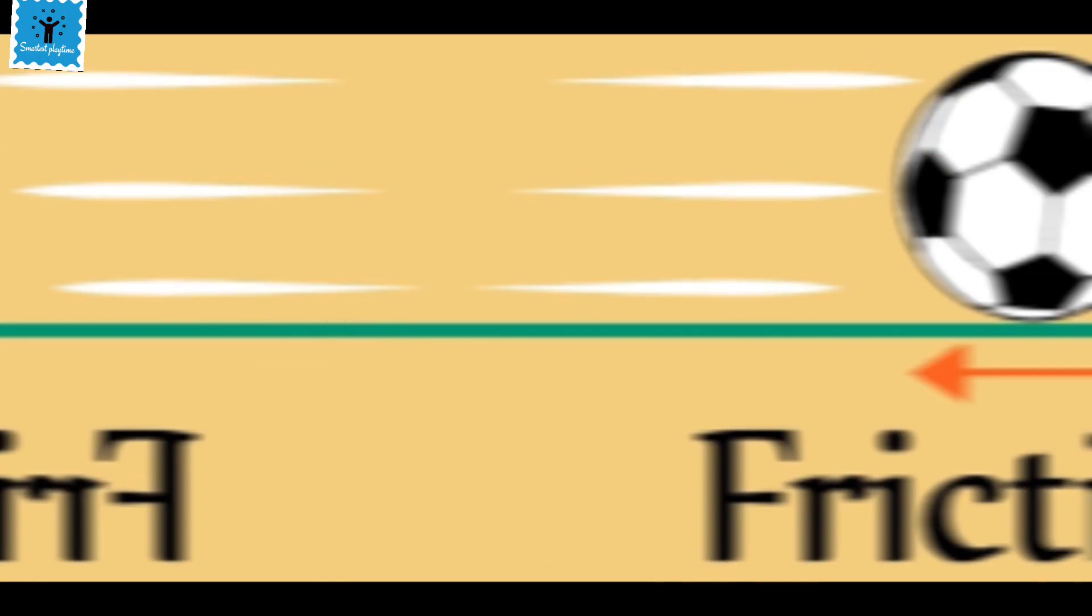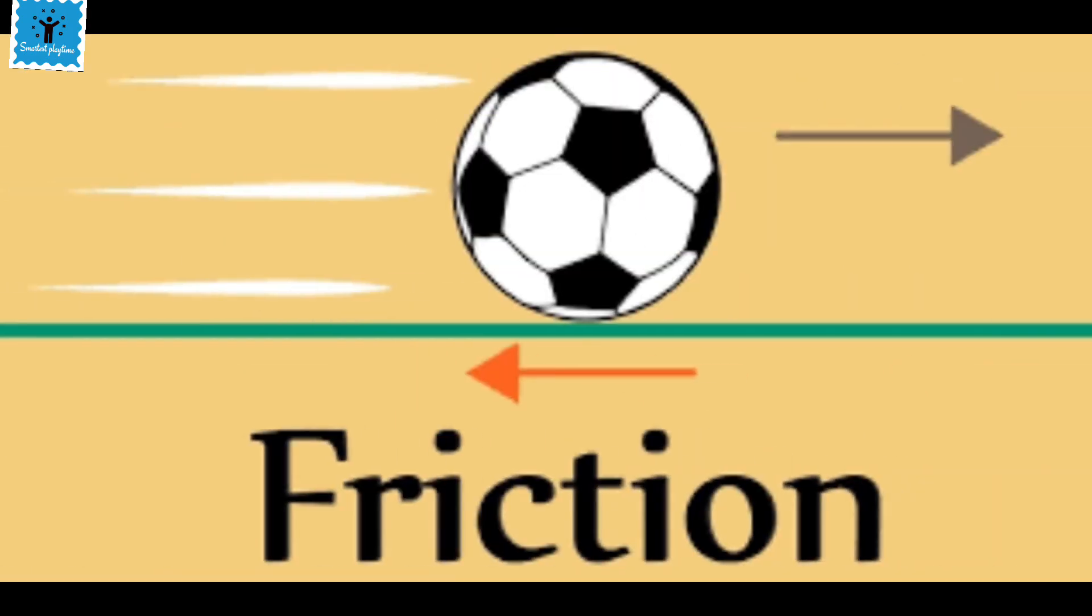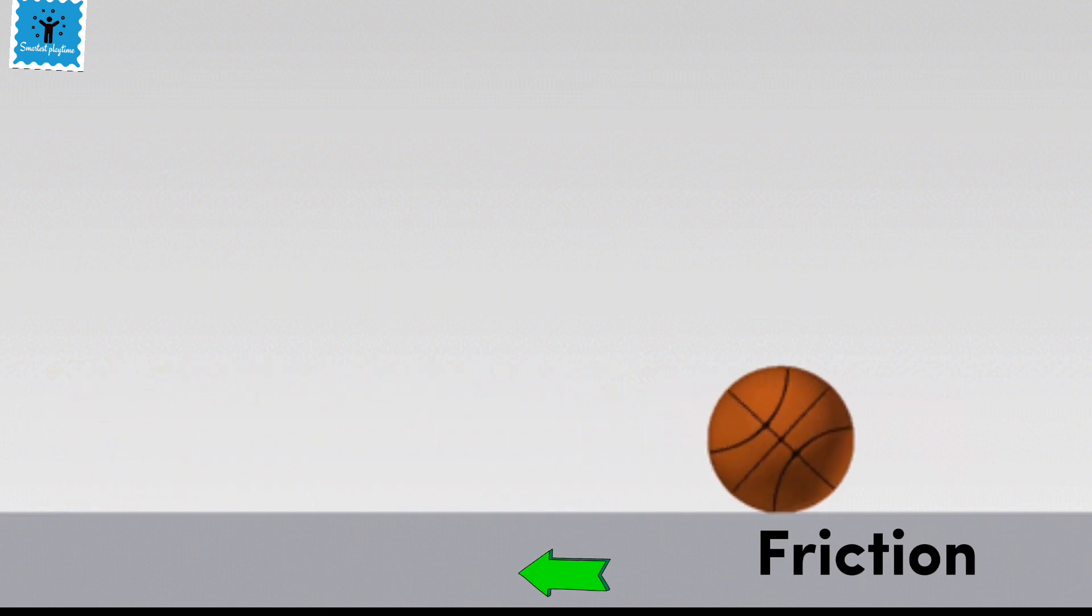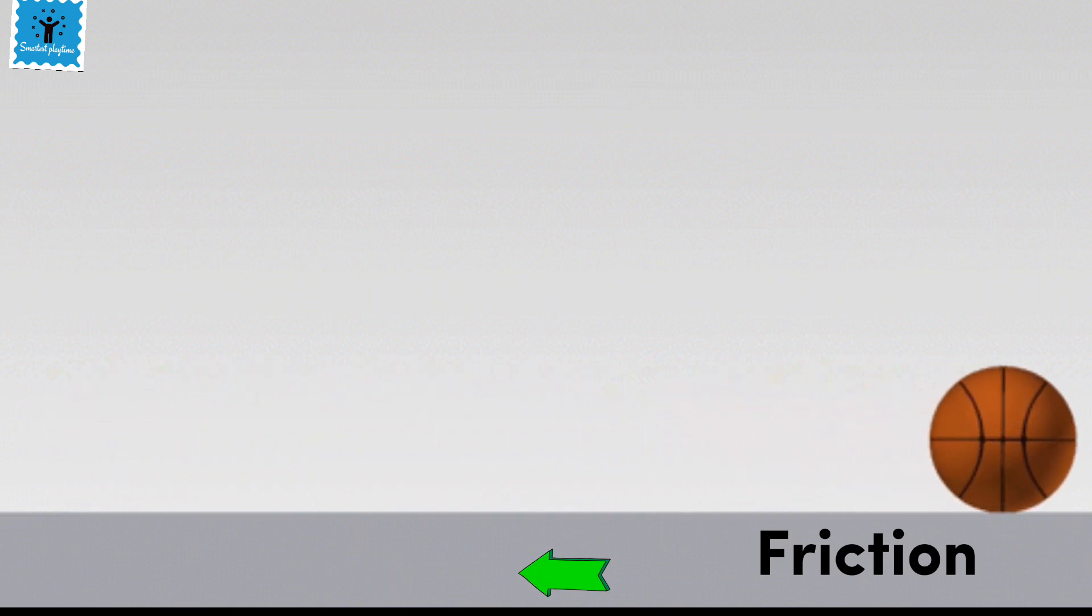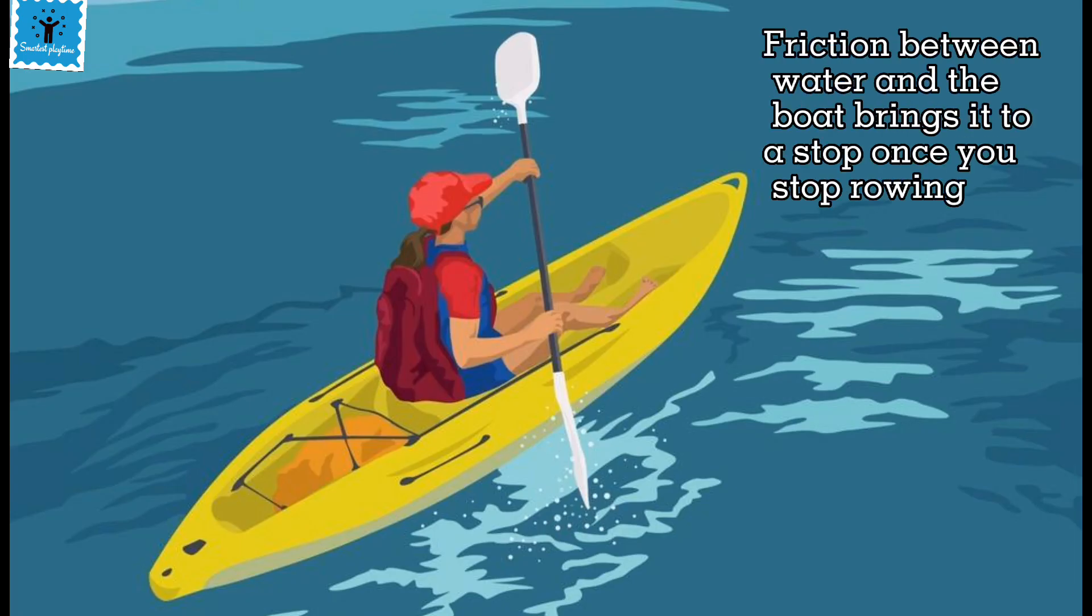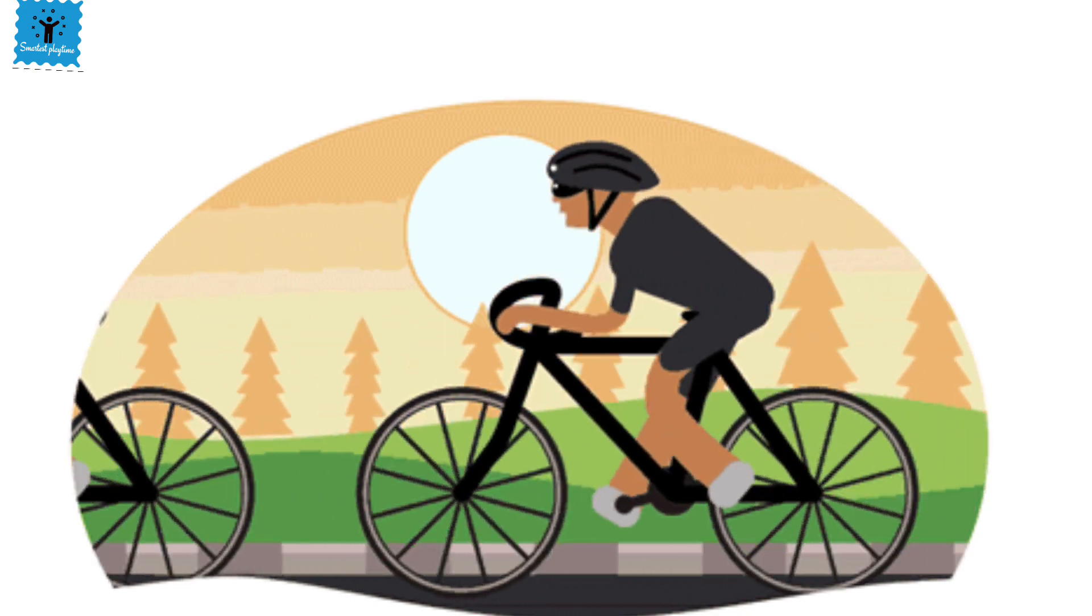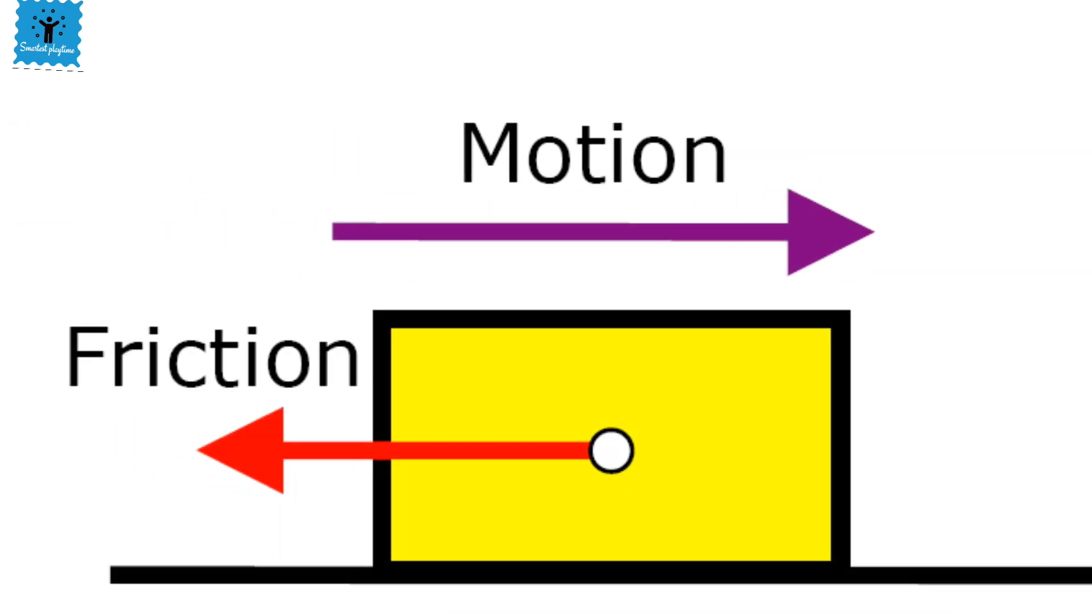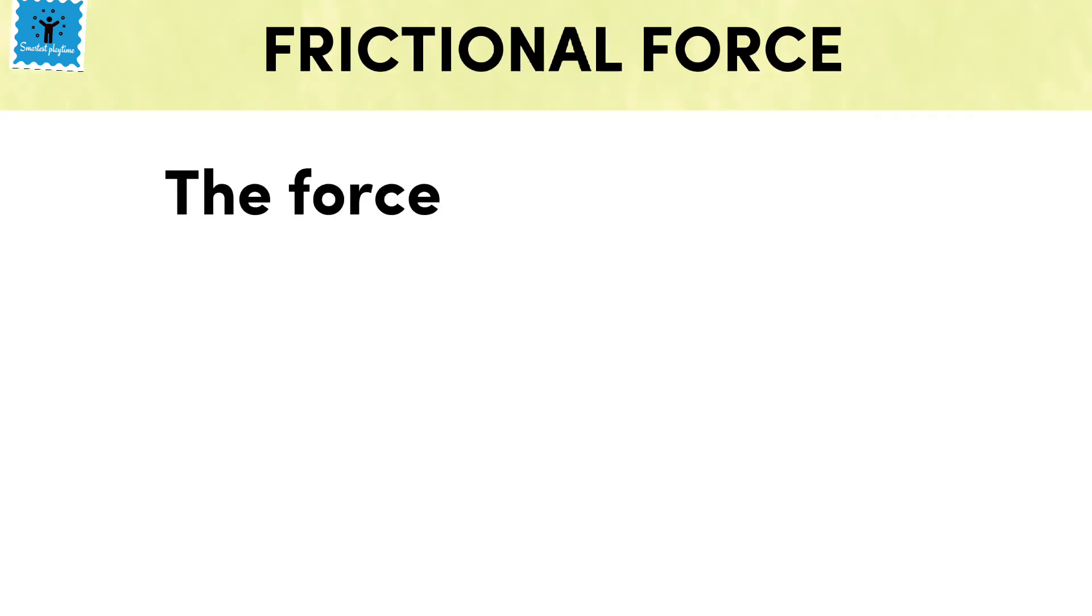The force responsible for changing the state of motion of objects in all these cases is the force of friction. It is the force of friction between the surface of the ball and the ground that brings the moving ball to rest. Similarly, the friction force between the water and the boat brings it to a stop once you stop rowing it. The force of friction always acts on all moving objects, and its direction is always opposite to the direction of motion.